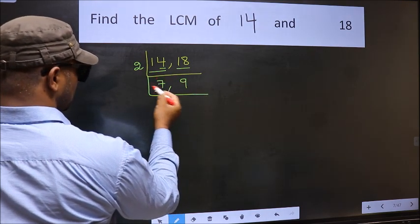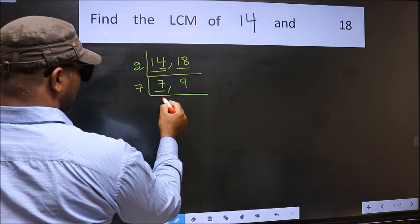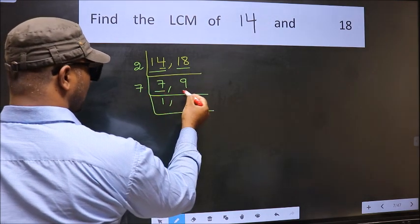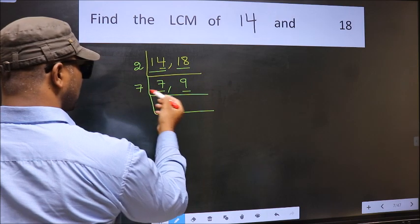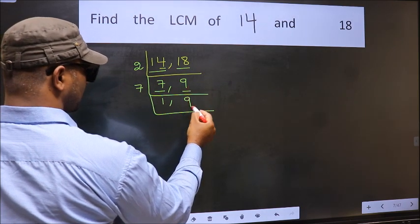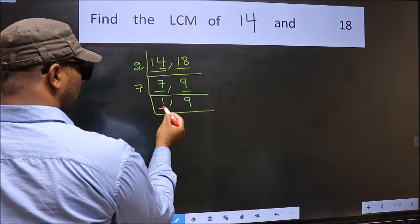Now here we have 7. 7 is a prime number. So 7 times 1 is 7. The other number 9, not divisible by 7. So we write it down as it is. We got 1 here.